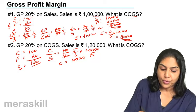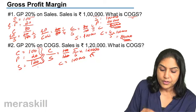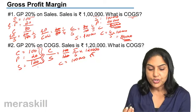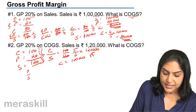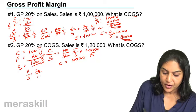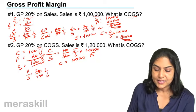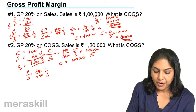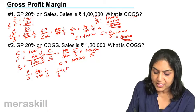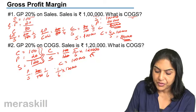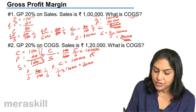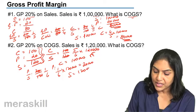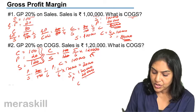We can also do it by finding profit separately. The relation of profit to sales is 20 by 120, which is 1 by 6. So profit equals 1/6 of 1 lakh 20,000, which is 20,000. Sales 1,20,000 minus profit 20,000 gives cost of goods sold equal to 1 lakh.